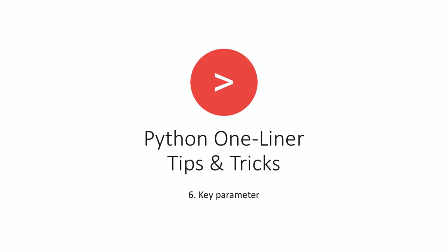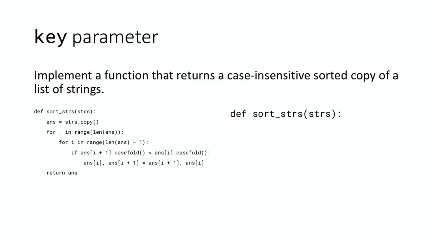Hello world, Noah here and welcome back to Python One-Liner Tips and Tricks. In this video we're going to be talking about the key parameter. The key parameter is present in a few built-in functions in Python. For example, it's present in the sorted function, the min function, and the max function. In order to explain why the key parameter is useful, I think it's best done through example. So before I explain what exactly it is, let's take a look at today's problem.